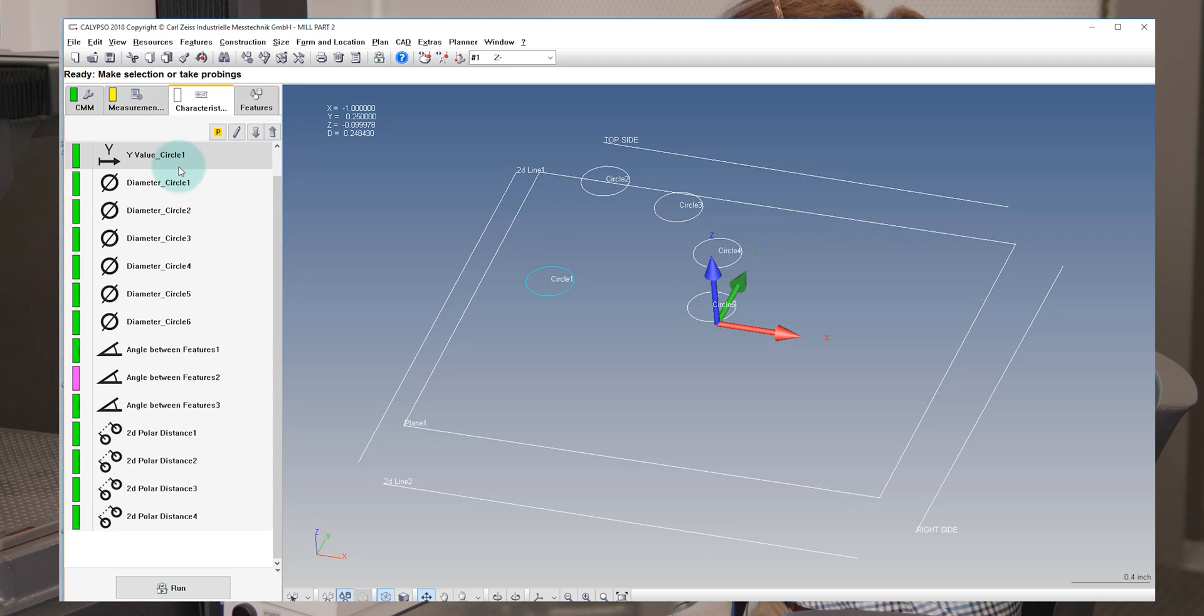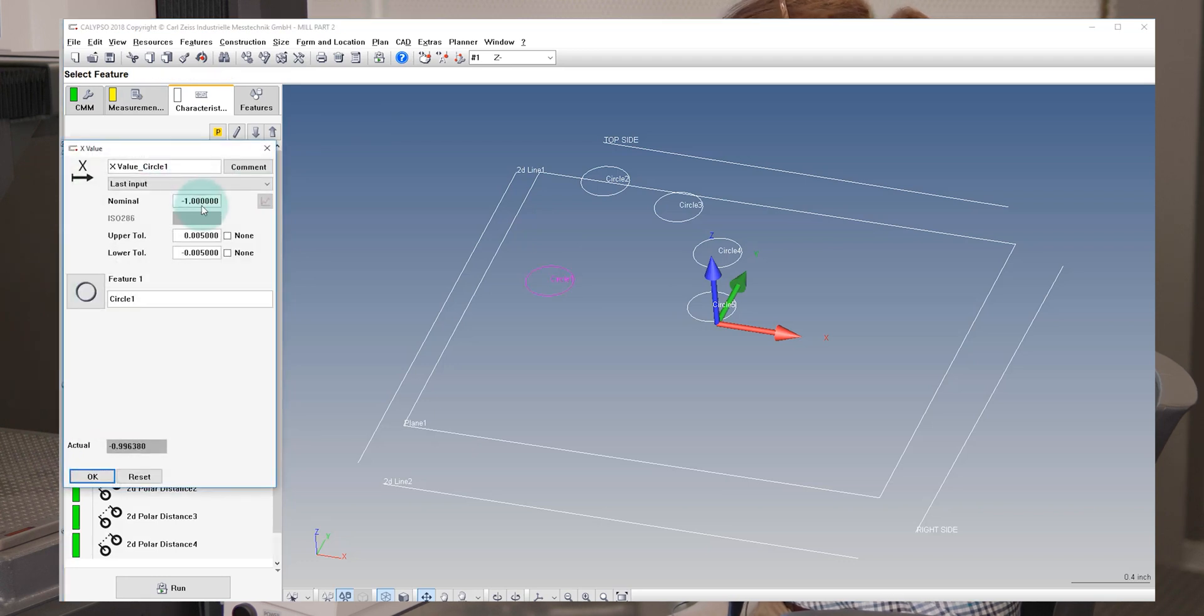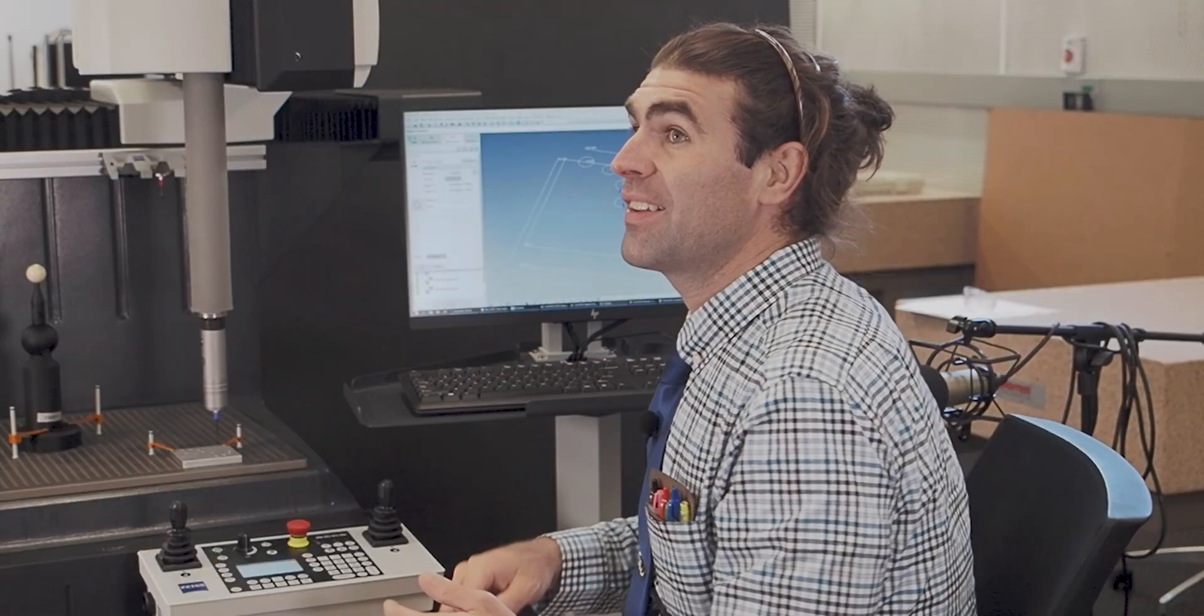And now when we go to characteristics, we'll check the X value. And that's exactly what we want. That's going to reflect what's actually on the drawing. And doing this this way, we didn't have to rewrite the program. We just moved our alignment, made it a little bit easier.